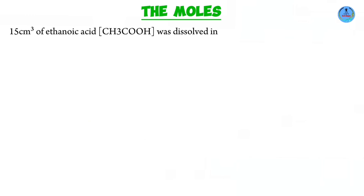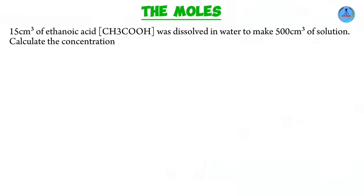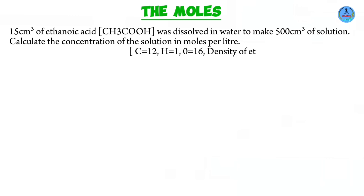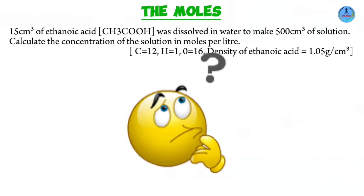Moving on to the next question. 15 cubic centimeters of ethanoic acid, CH3COOH, was dissolved in water to make 500 cubic centimeters of solution. Calculate the concentration of the solution in moles per liter. We've been given the RAMs of carbon, hydrogen, and oxygen, and the density of ethanoic acid. Concentration in moles per liter refers to the molarity.